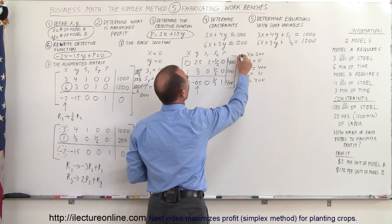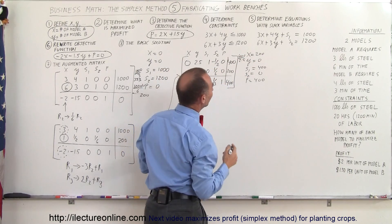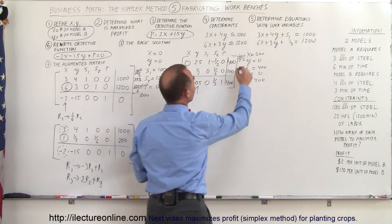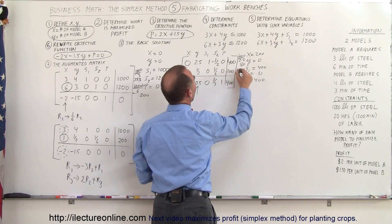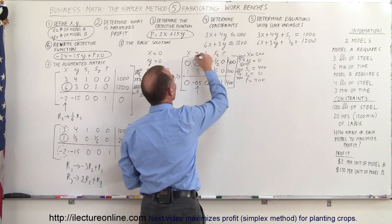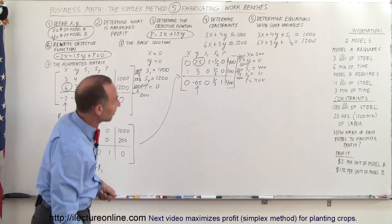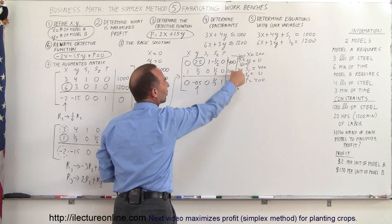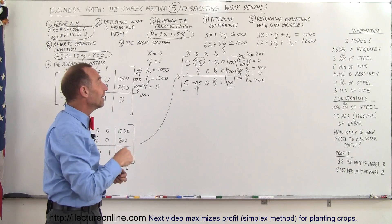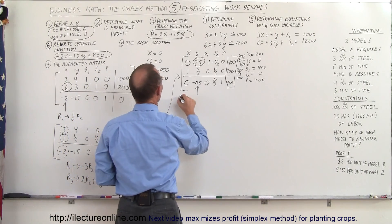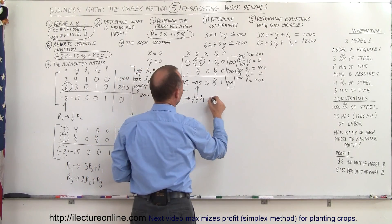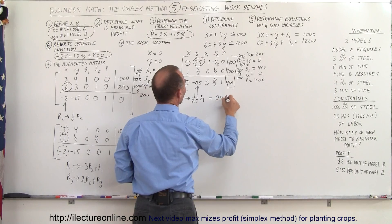We go back to the y column to find the next pivot. Computing ratios: 400 divided by 2.5 gives 160, and 200 divided by 1.5 gives about 133. Wait — 400 divided by 2.5 is 160, and 200 divided by 0.5 is 400. So 160 is the smallest ratio, meaning we pivot around the 2.5 in row 1. We divide row 1 by 2.5, which is the same as multiplying by 0.4.